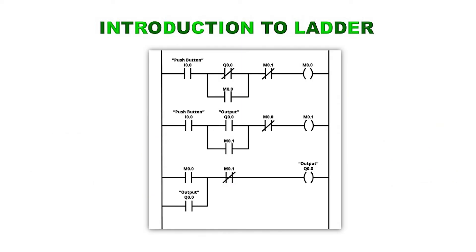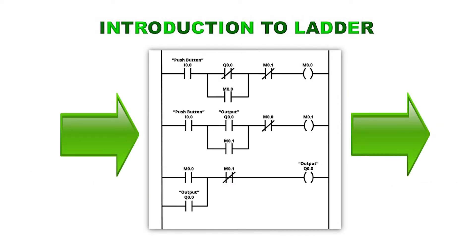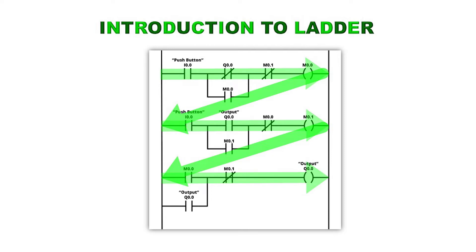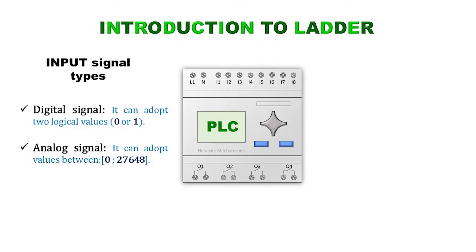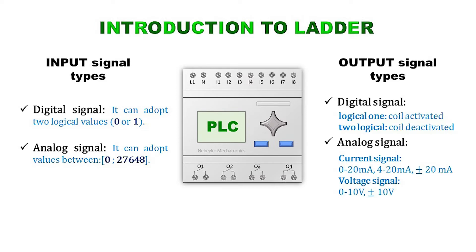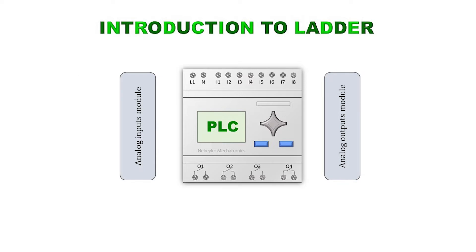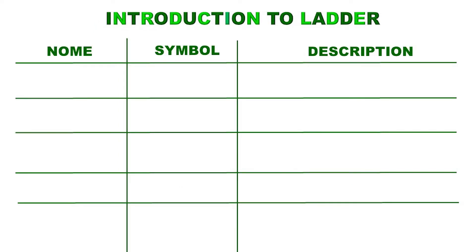Reading a ladder diagram is done from left to right and from top to bottom. The types of input signals to a PLC can be digital signals or analog signals, and the same occurs with the outputs. It should be clarified that not all PLCs accept analog signals, so in some cases converter modules must be used. This video will only explain the elements that use digital signals, which allow us to perform logical operations with bits.